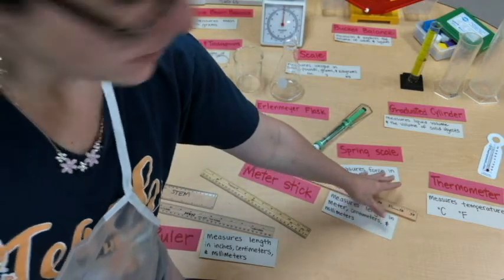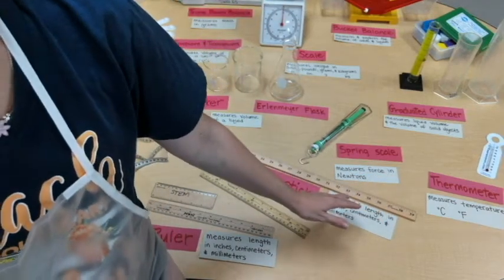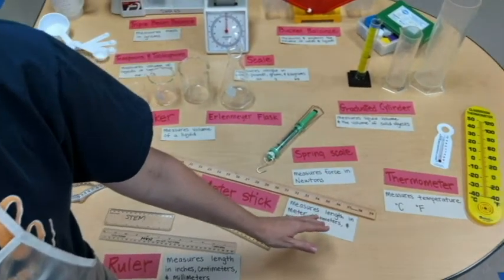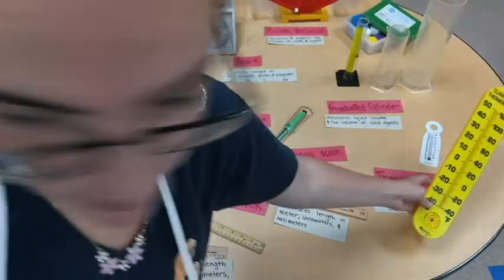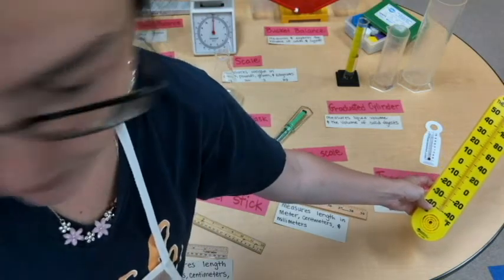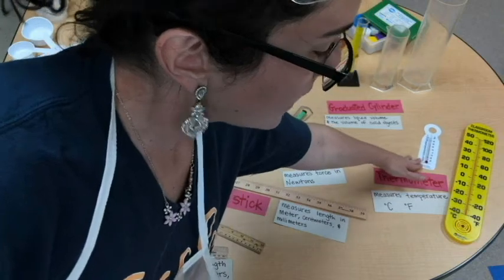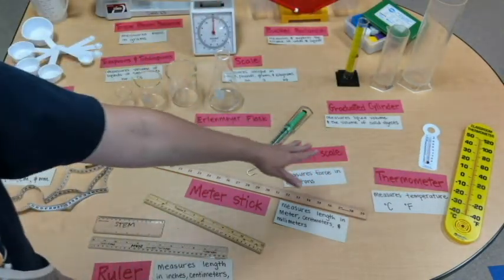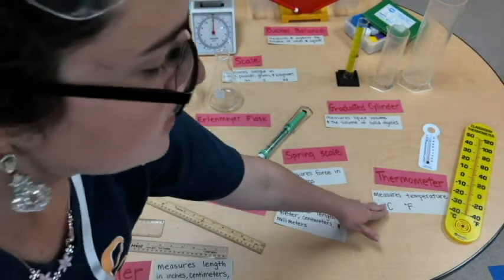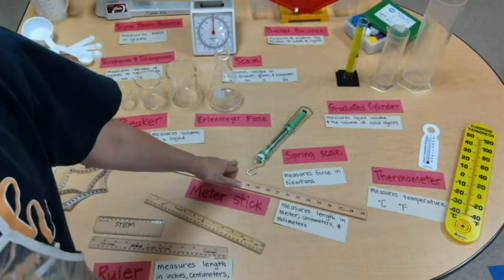Over here, we have our thermometer. And they might come in different shapes or sizes as well. Here we have a jumbo one. It's yellow. But it has the same measurements and accurate reading as a smaller size. And that measures temperature, Celsius or Fahrenheit.